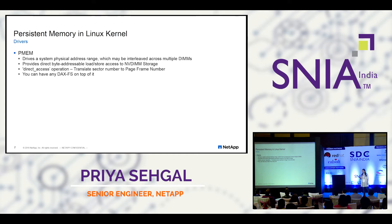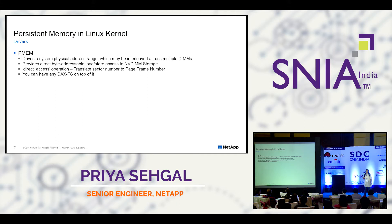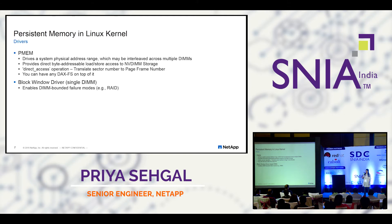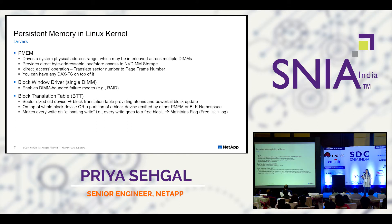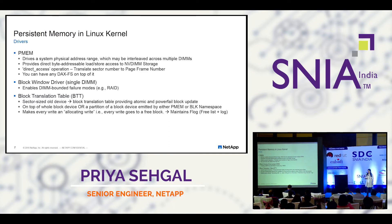Now let's go deeper into persistent memory in the Linux kernel. First come the drivers. One is the PMM driver, which drives the system physical range for interleaved memory DIMMs. To access it — if you're implementing your own driver from a Linux point of view — you will have to implement something called a direct access operation. It translates a sector number to an actual page frame number, so all the DAX-enabled file systems sit on top of it. The second is the block window driver, again for the block namespaces — you can have more than one block namespace and implement RAID on top of it.